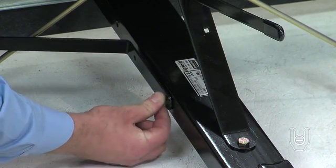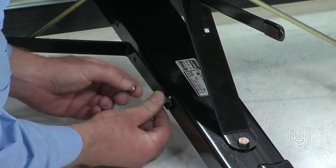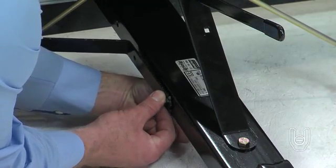Attach the brace to the tongue using two hex bolts, part D, with nylock nuts, part H, but do not tighten the nuts at this time.